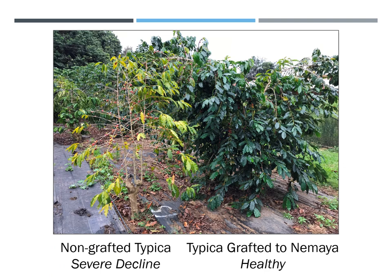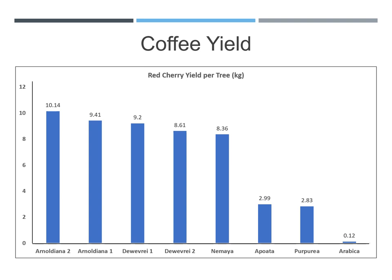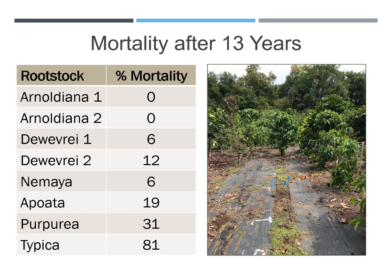Near the end of the study, the results were visually striking. Over time, non-grafted Typica showed severe decline, as shown in this photo, and high mortality. Typica grafted on tolerant Liberica rootstocks, or resistant Robusta varieties like Namaya, shown here, remained healthy with high yields. The four Liberica cultivars produced the highest overall, with averages up to 10 pounds per tree per season. Namaya was also statistically similar in production volume. The Robusta cultivar Apuwata and the Arabica cultivar Purpurea had poor yields under three pounds per tree. Typica trees produced under one pound per tree due to high mortality overall. The Liberica cultivar Arnoldiana had no mortality during the 13-year study. The other Liberica cultivar, Namaya, had only 6 to 12 percent tree death. 81 percent of the non-grafted Typica trees died and were removed from the field, as shown in this photo.